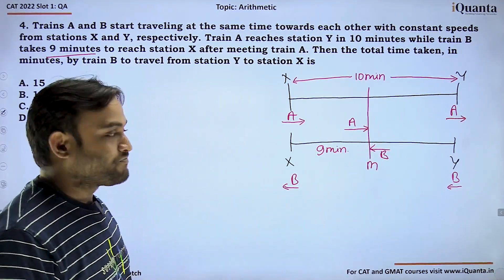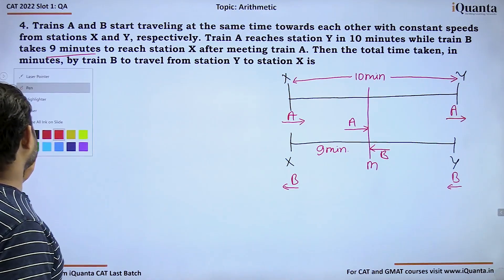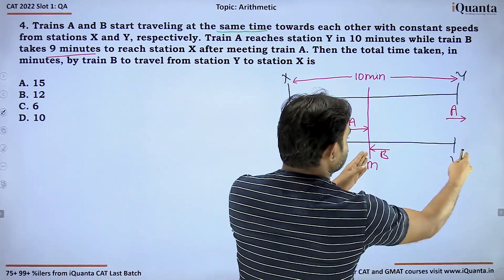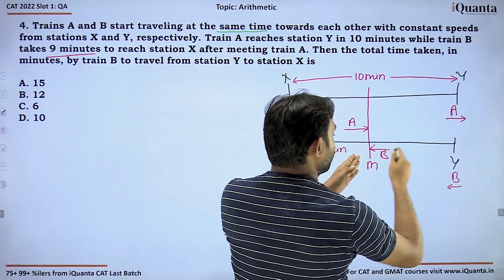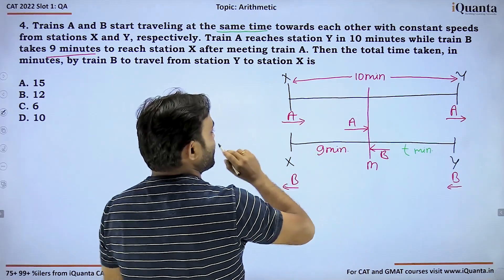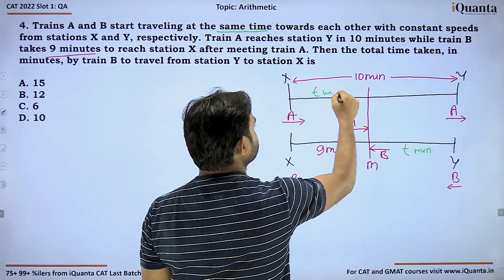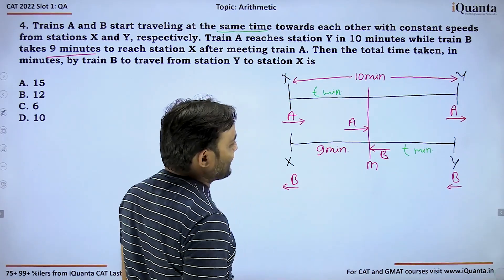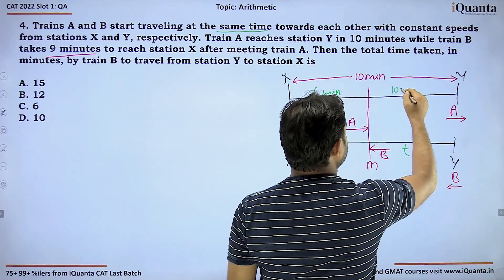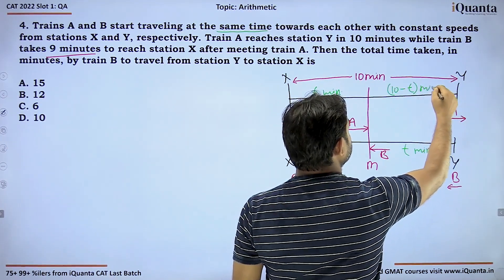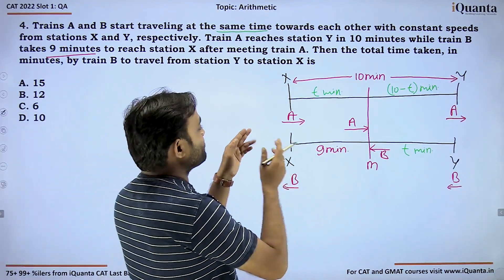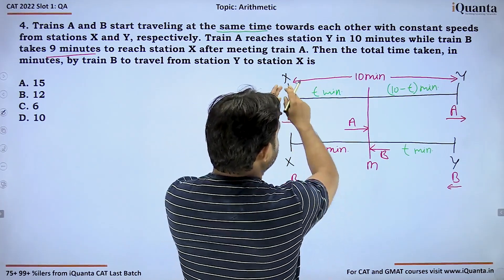Train A is starting from X and arriving at Y in total time of 10 minutes. B is starting from Y reaching X, but after meeting at point M, B takes 9 minutes to reach X. As they start simultaneously, if B takes T minutes from Y to M, then A also takes T minutes from X to M. Then time taken by A from M to Y must be 10 minus T minutes.